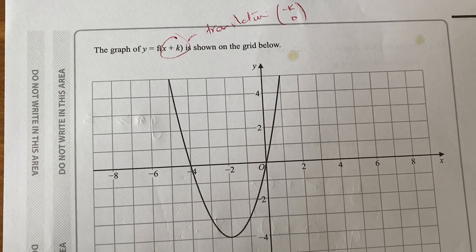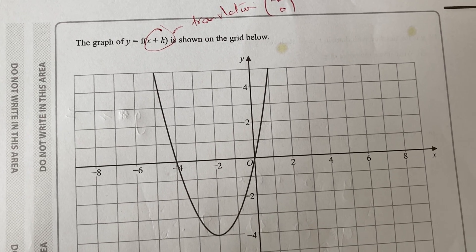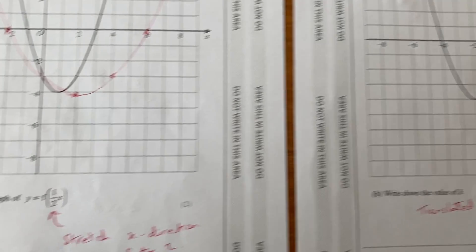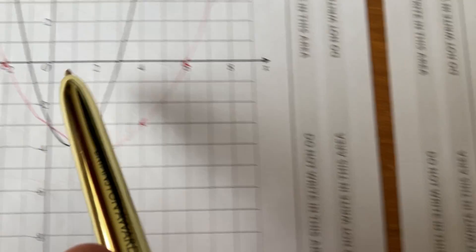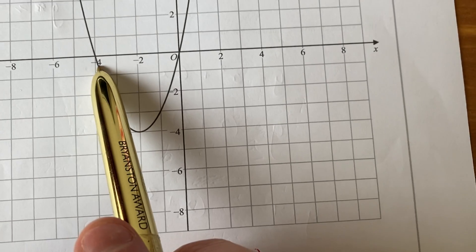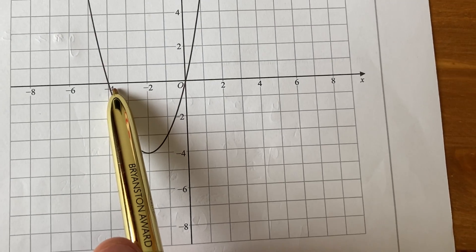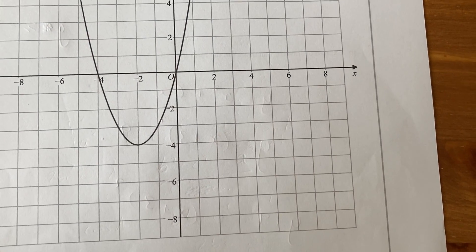Part B, there's a translation that's taken place. The original graph, this one here, was going through 1. This one here goes through at minus 4, means that it has moved 3 to the left.